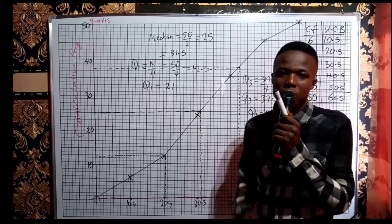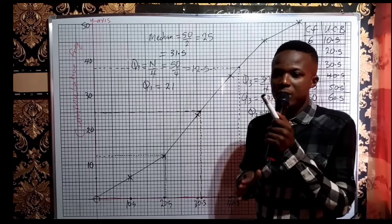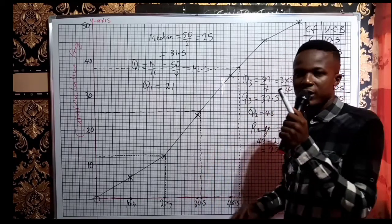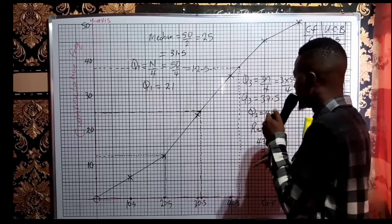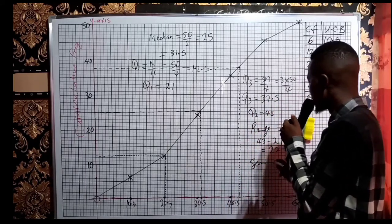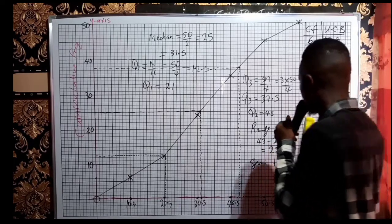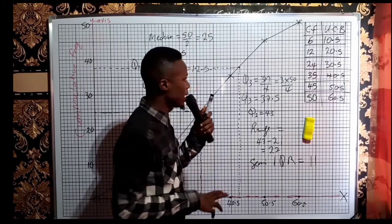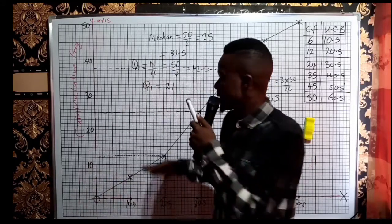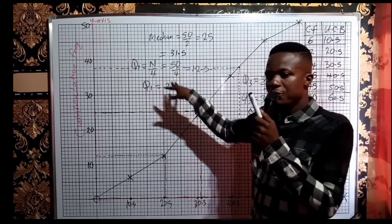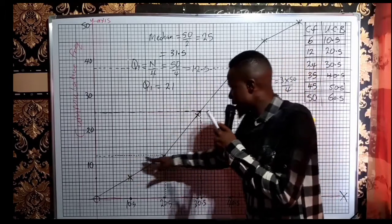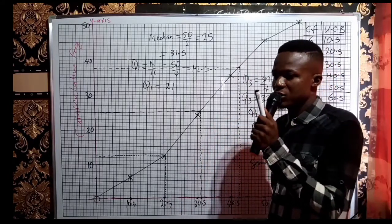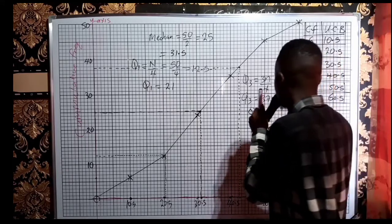They still want us to get the semi-interquartile range. Semi means half, so the semi-interquartile range means dividing the interquartile range by 2. Since our interquartile range is 22, divide 22 by 2 to get 11. Therefore the semi-interquartile range is 11. We have now seen how to get the upper and lower quartiles: use the formula n over 4 for Q1 and 3n over 4 for Q3, trace in the graph, and read off the horizontal axis value.